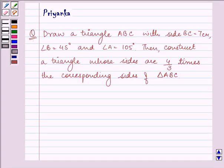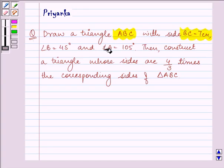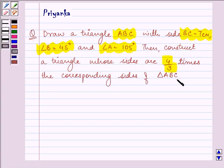Hi and how are you all doing today? The question says, draw a triangle ABC with side BC equal to 7 cm, angle B equal to 45 degrees and angle A equal to 105 degrees. Then construct a triangle whose sides are 4 by 3 times the corresponding sides of triangle ABC.